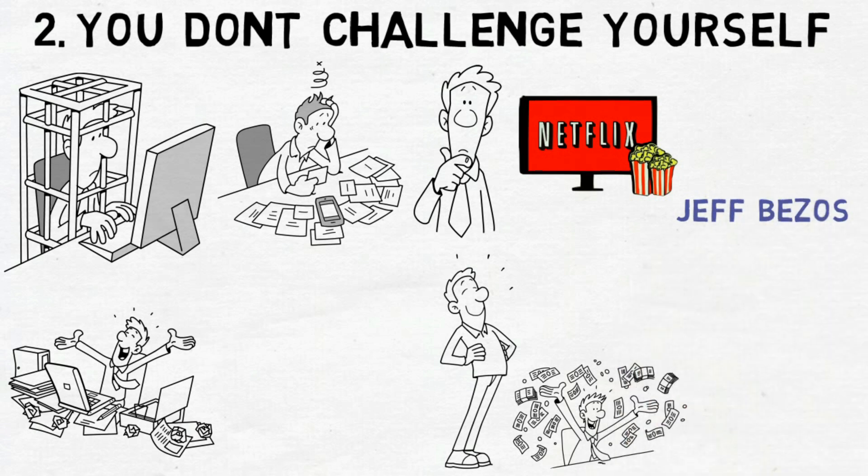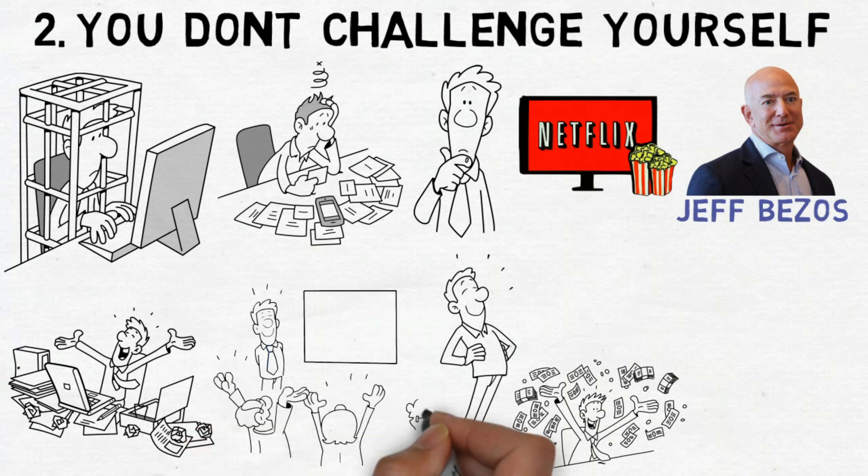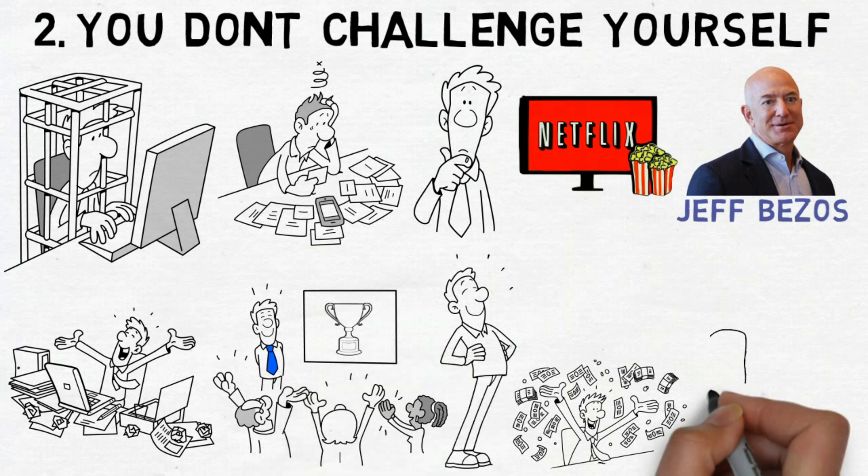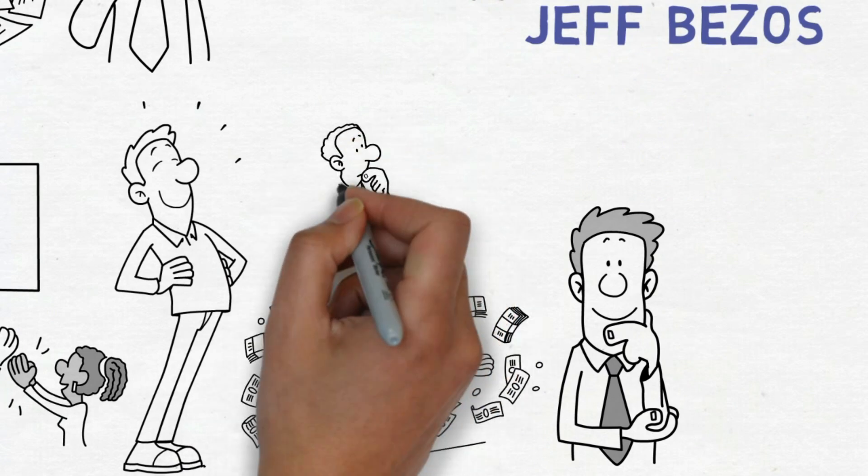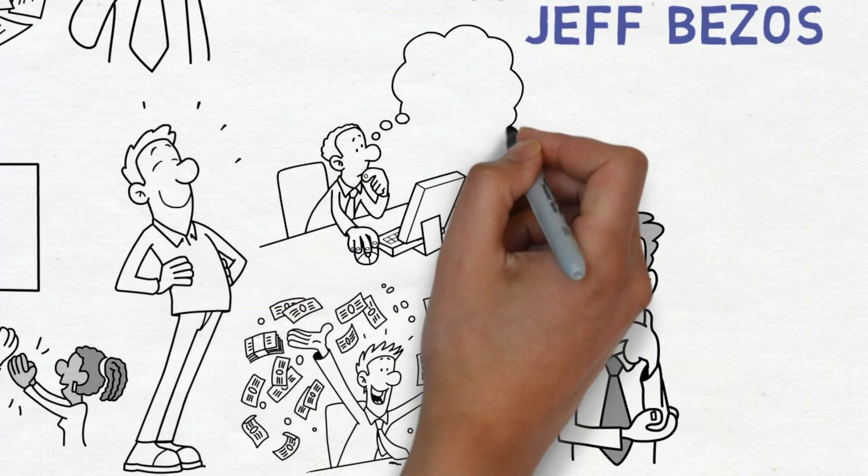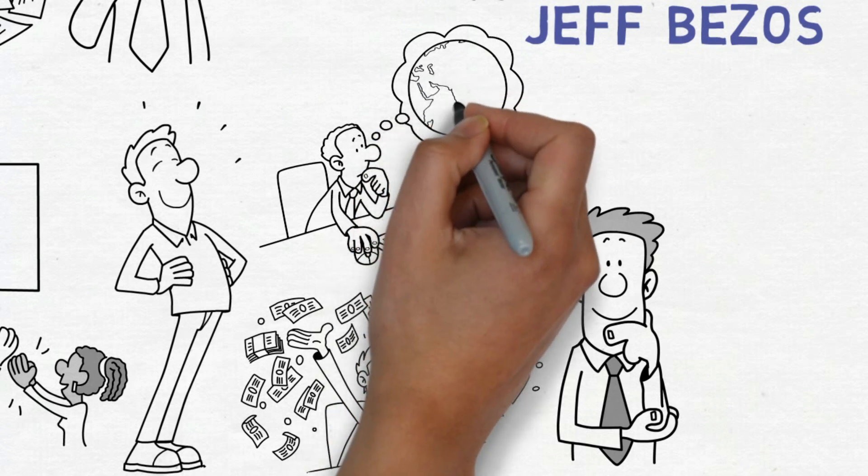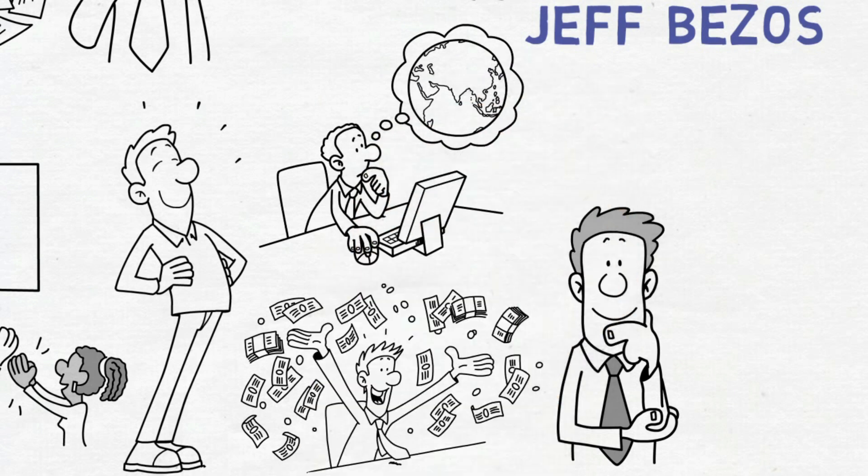Consider the case of Jeff Bezos, one of the richest men in the world. During his 20s, Bezos occupied influential roles within prominent technology and investment firms, yet he always harbored a sense of being destined for something greater. Despite holding a senior vice president position and reaping substantial earnings, Bezos chose to challenge himself by initiating a book retailing enterprise, an endeavor that has now evolved into the global giant known as Amazon.